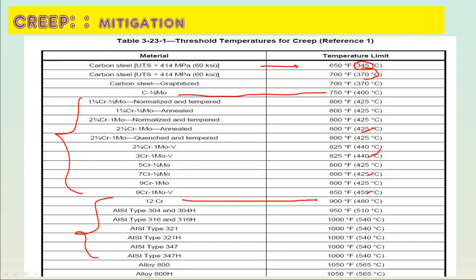For austenitic stainless steels: 12% chromium is usable up to 480°C; SS 304 up to 510°C; SS 316 up to 540°C; grades 321, 321H, 347, and 347H up to 540°C. Alloy 800 and 800H can be used up to 565°C. We must operate below these threshold temperatures to avoid creep in our components.